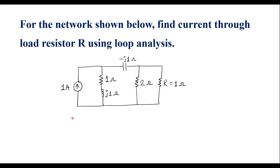In this video, I will consider one numerical on loop analysis. For the network shown below, find current through load resistor R using loop analysis. This is the given circuit. Here we have R, and the value of R is 1 ohm. We are supposed to calculate the current through this load resistor, that is 1 ohm resistor.